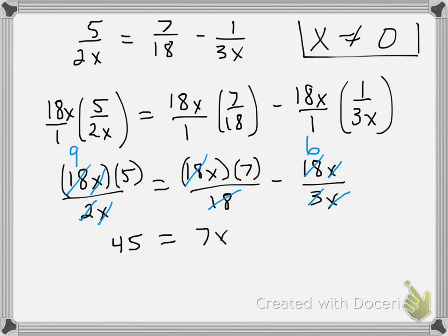I can add 6 to both sides, and I get 51 equals 7x, and then lastly divide both sides by 7, leaving me with x equals 51 over 7.